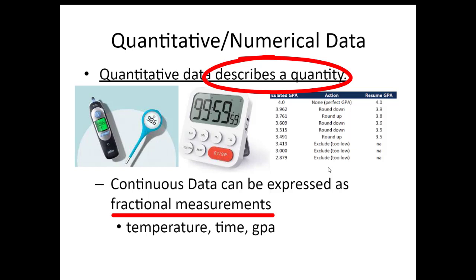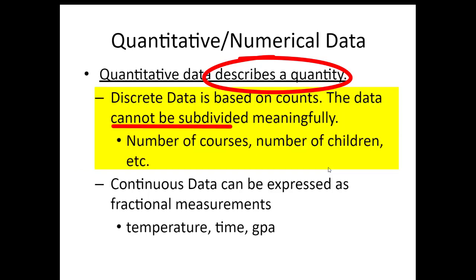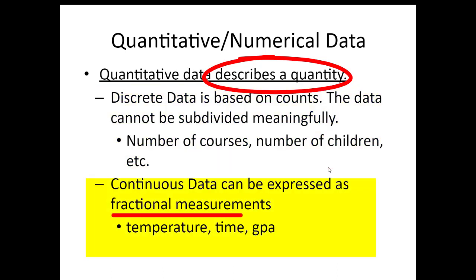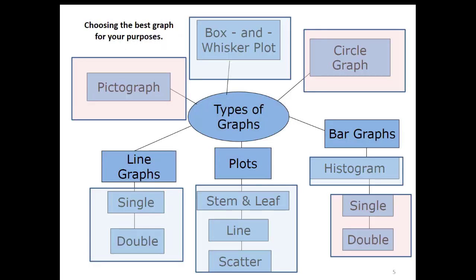For example, the number of courses — you can't take three and a half courses, you either take three or four. The number of children in a family. The other type is continuous data, which can be expressed as fractional measurements. Things like temperature, time — in the Olympics they break down minutes into milliseconds — and GPA, which can go out to the thousandths or even ten-thousandths.